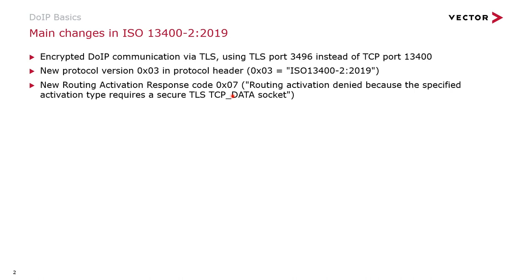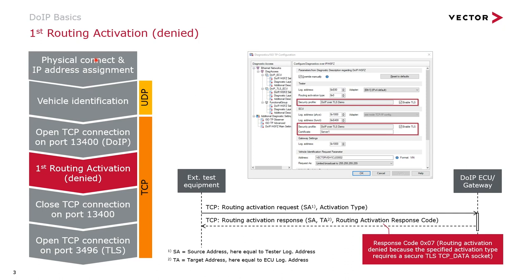Now we will have a look at the impact of these changes on a DoIP communication sequence. The initial phase — this means the physical connect, the IP address assignment, the vehicle identification, and opening the TCP connection on port 13400 — is exactly the same as for a normal unencrypted DoIP session.